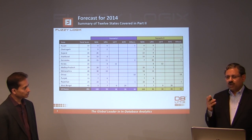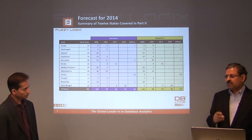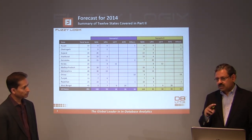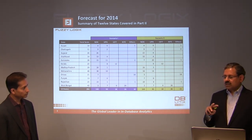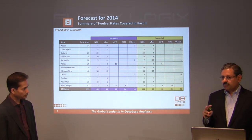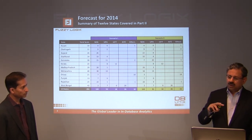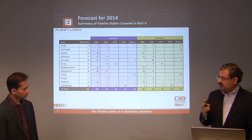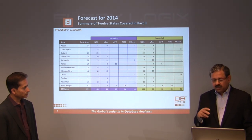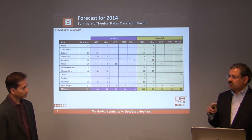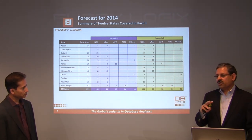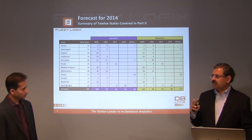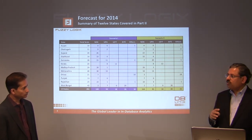A one or two percent vote share difference in certain states causes a significant swing. In Karnataka, a one-to-two percent difference results in a swing of about seven or eight seats between the NDA and Congress. Similarly, in Rajasthan, a one-to-two percent vote share difference could result in three or four more seats for the BJP versus Congress. You cannot hang your hat on one number.